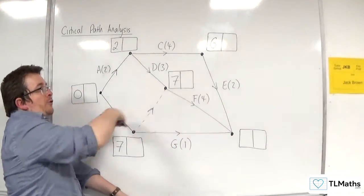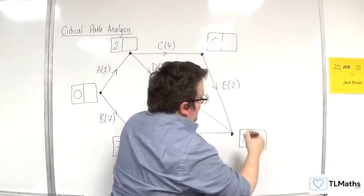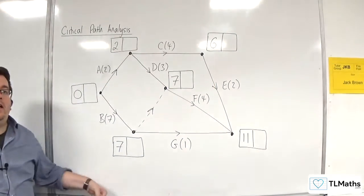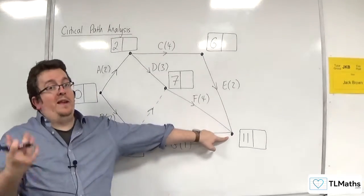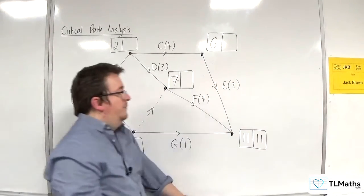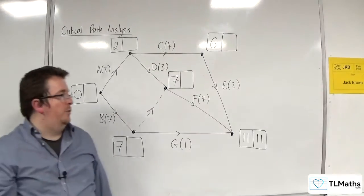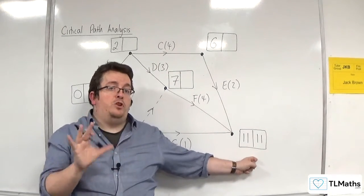But as we saw with this box, we chose the larger. So this should be 11. So that's the earliest I can reach that node. So the late event time is the same. So when you get to your final node, the early event time should be the same.